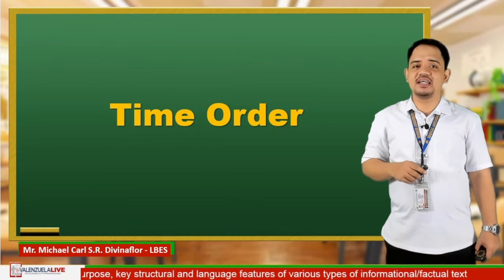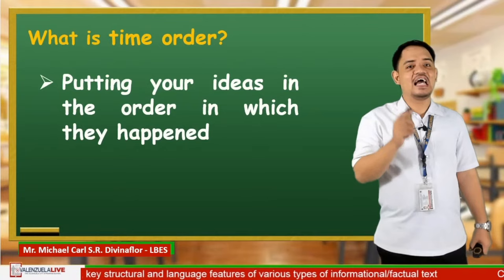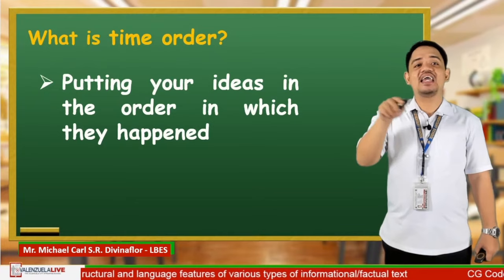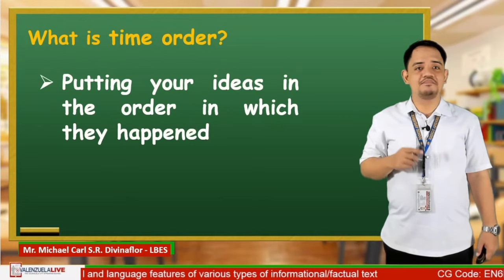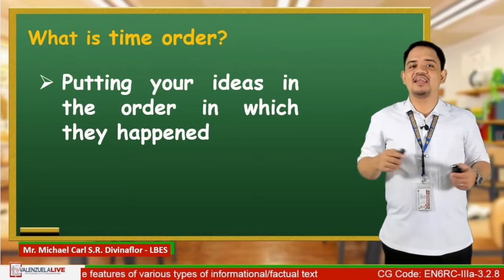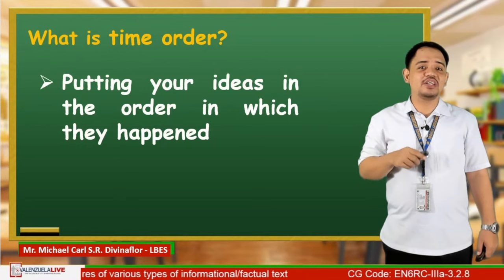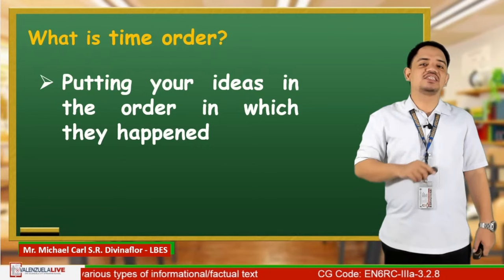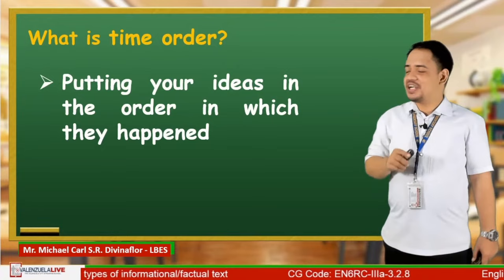Let's start our lesson by defining the following ideas. The first one on our list is the term time order. Time order with regards to writing means putting your ideas in order in which they happen. When you are writing about a past event, you need to use a time order. You begin with the first thing that happened, then tell the second thing, then the third, and so on. You need time order so that your reader can understand when something happened. If you tell a story without time order, you will confuse your reader.